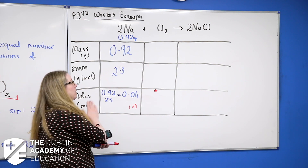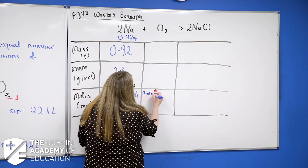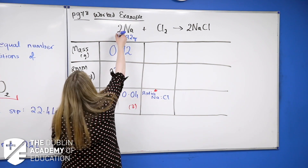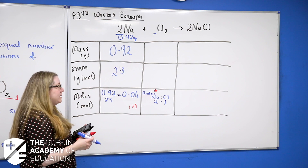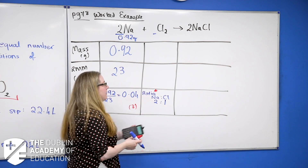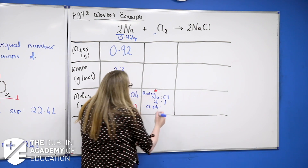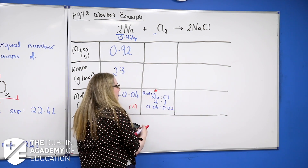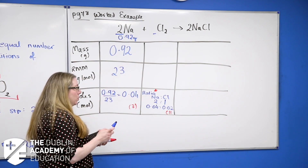Now use that to find the moles of chlorine. Working across the table you always compare the ratio of substances — the ratio of sodium to chlorine is 2:1. There's a 2 in front of sodium and a 1 in front of chlorine. If I start with 2 moles of sodium I need half as many moles of chlorine. We're starting with 0.04 moles, so we still need half as many: 0.02 moles of chlorine. That's 3 marks.